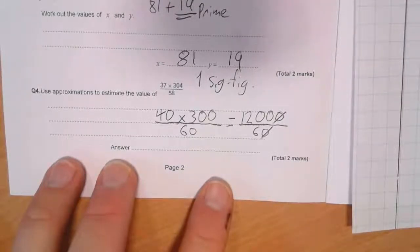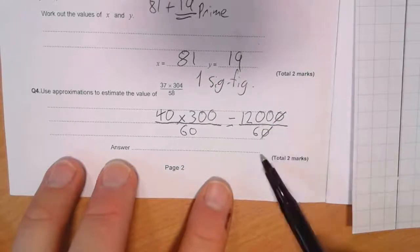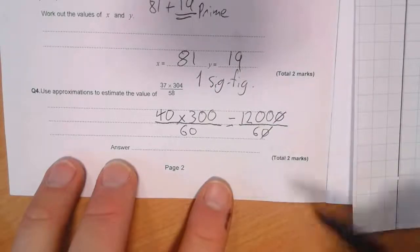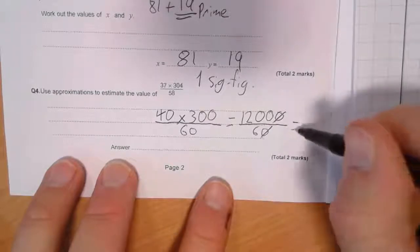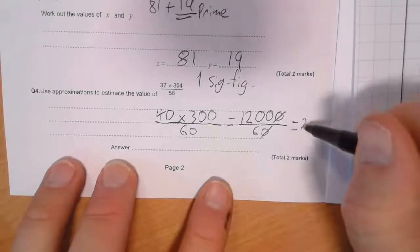So we cancel those zeros out because they're both times by 10 on the top and the bottom. It gives me 1,200 divided by 6, which just gives me 200.